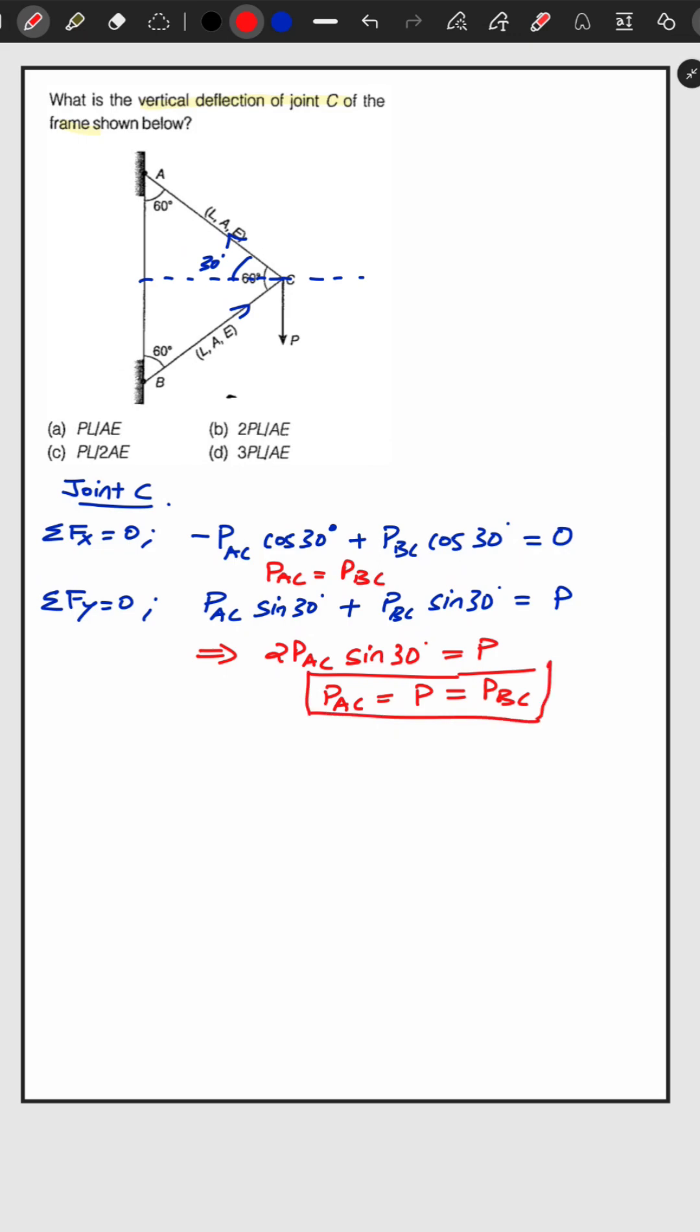Now we will find out the strain energy at joint C. And then by using del u by del p we can find out delta vertical deflection at joint C. So here the force is P and here the force is P. So total strain energy will be UAC plus UBC as there are two members connecting joint C.